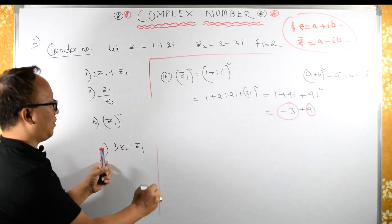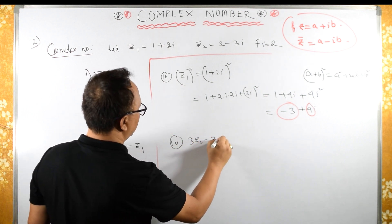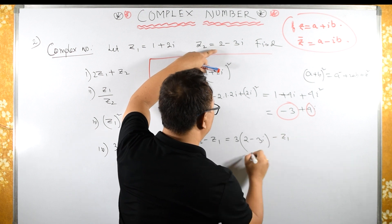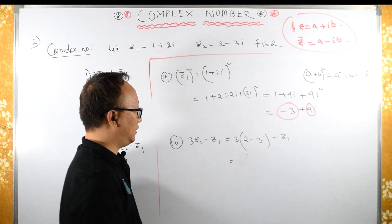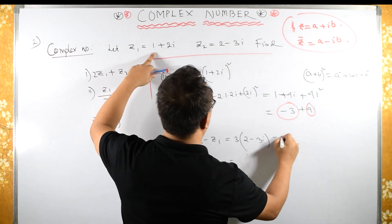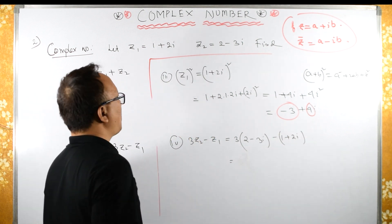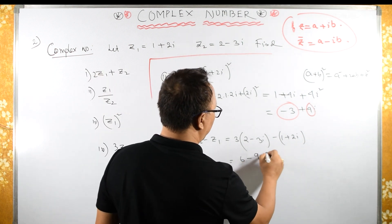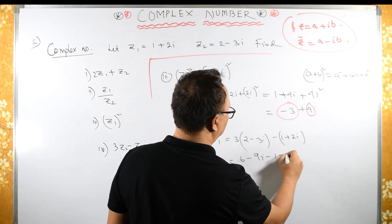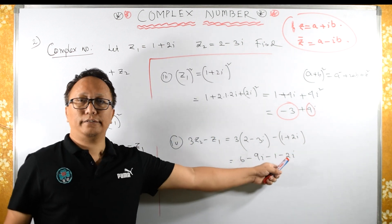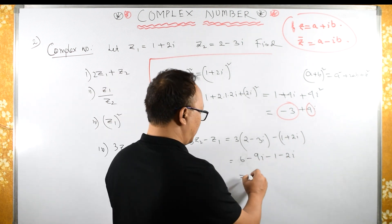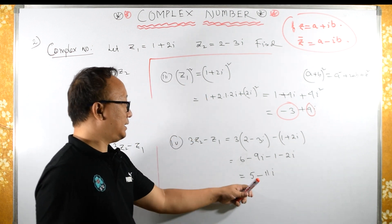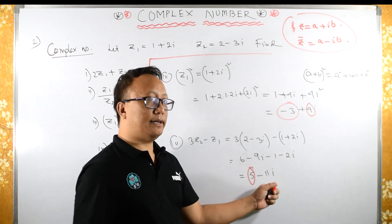Now the subtraction: 3Z2 minus Z1. Substituting: 3 times (2 minus 3i) minus (1 plus 2i). Expanding: 6 minus 9i minus 1 minus 2i. Collecting real parts: 6 minus 1 equals 5. Collecting imaginary parts: minus 9i minus 2i equals minus 11i. So the answer is 5 minus 11i, where 5 is the real part and minus 11 is the imaginary part.